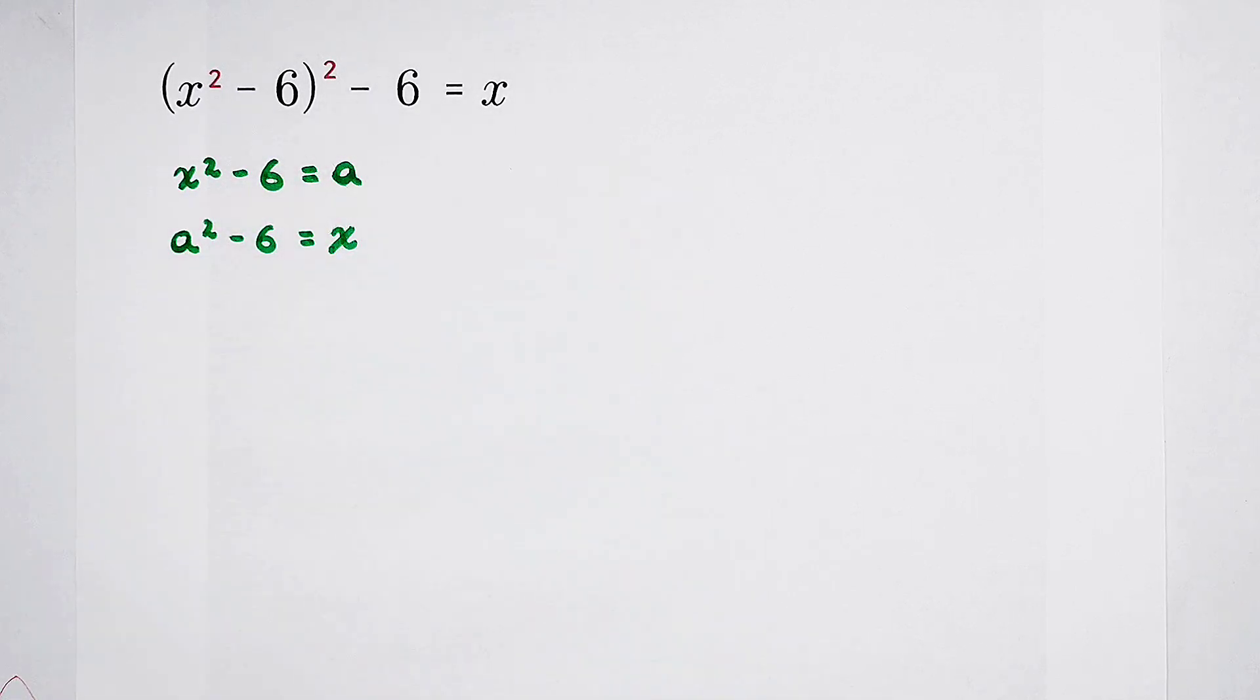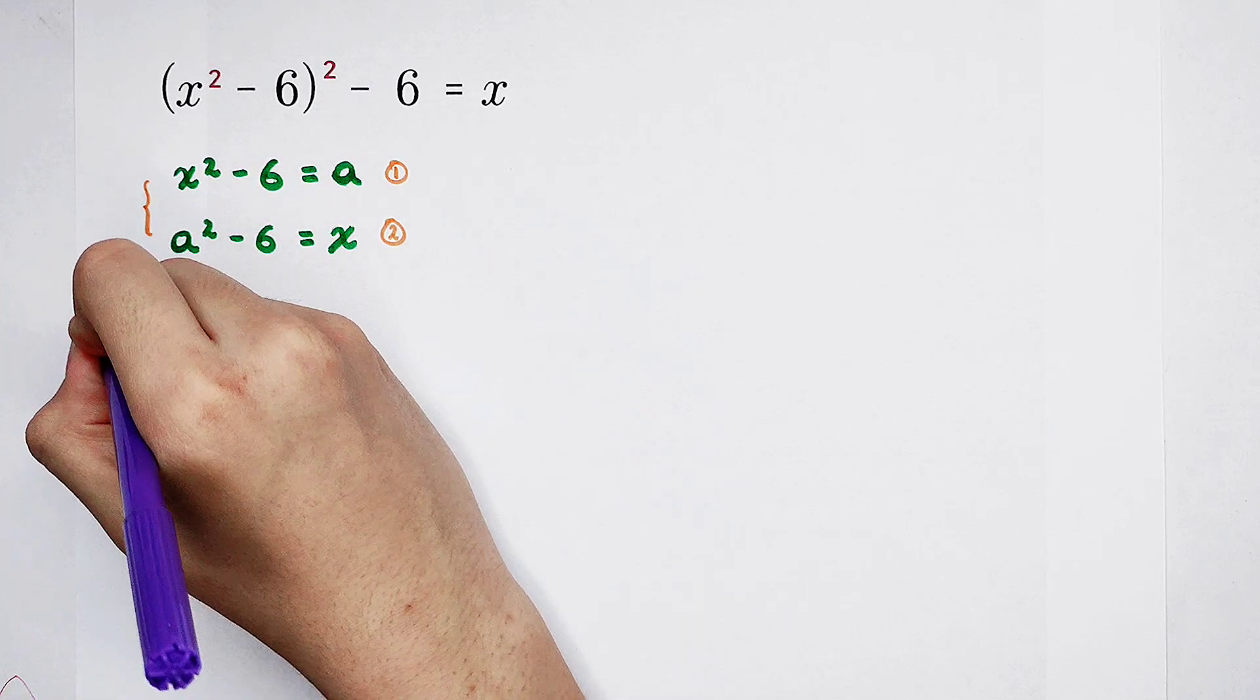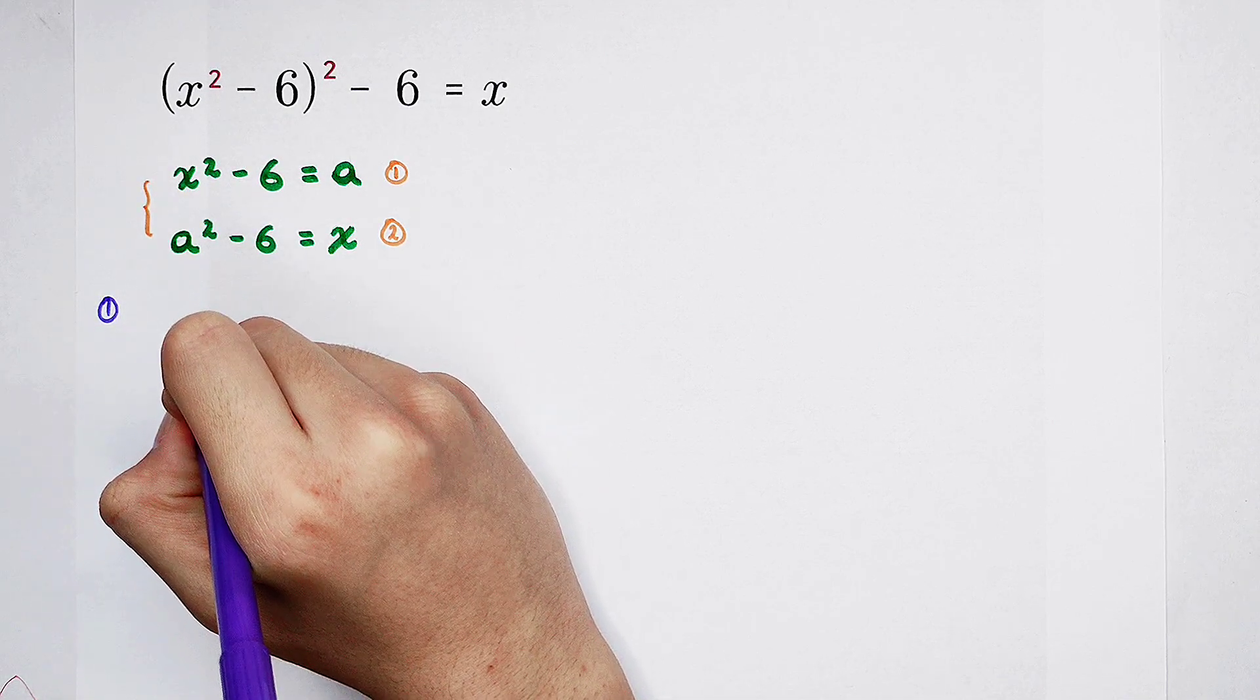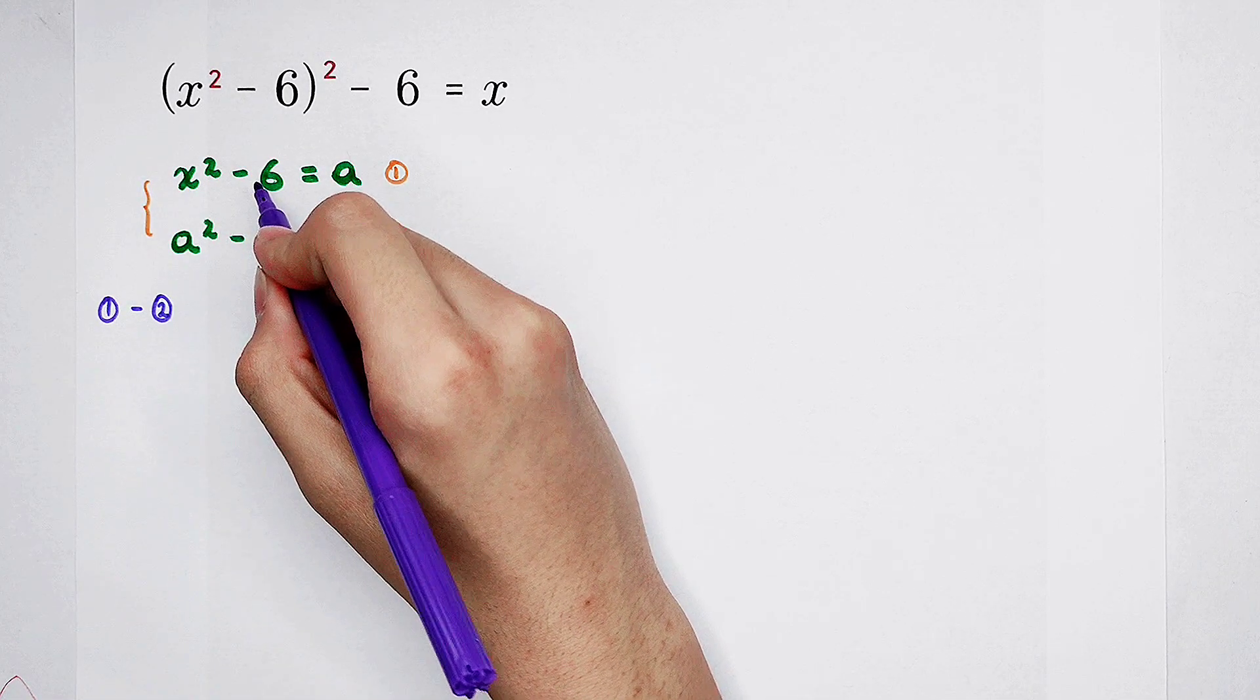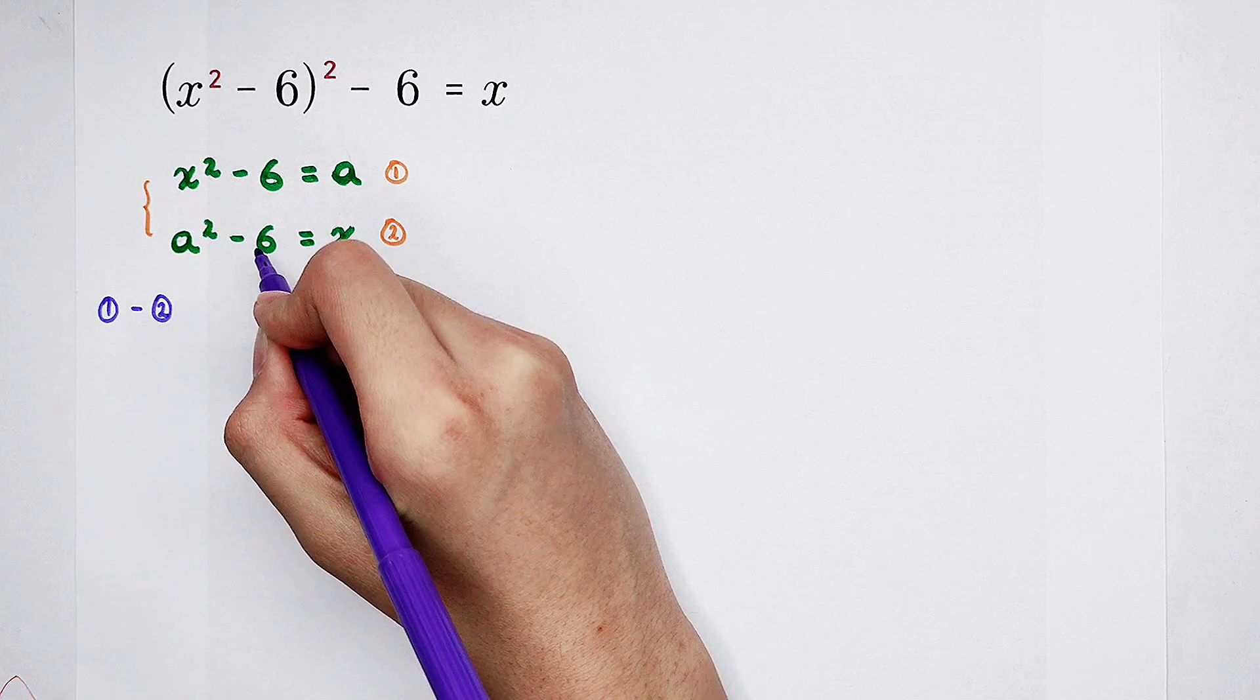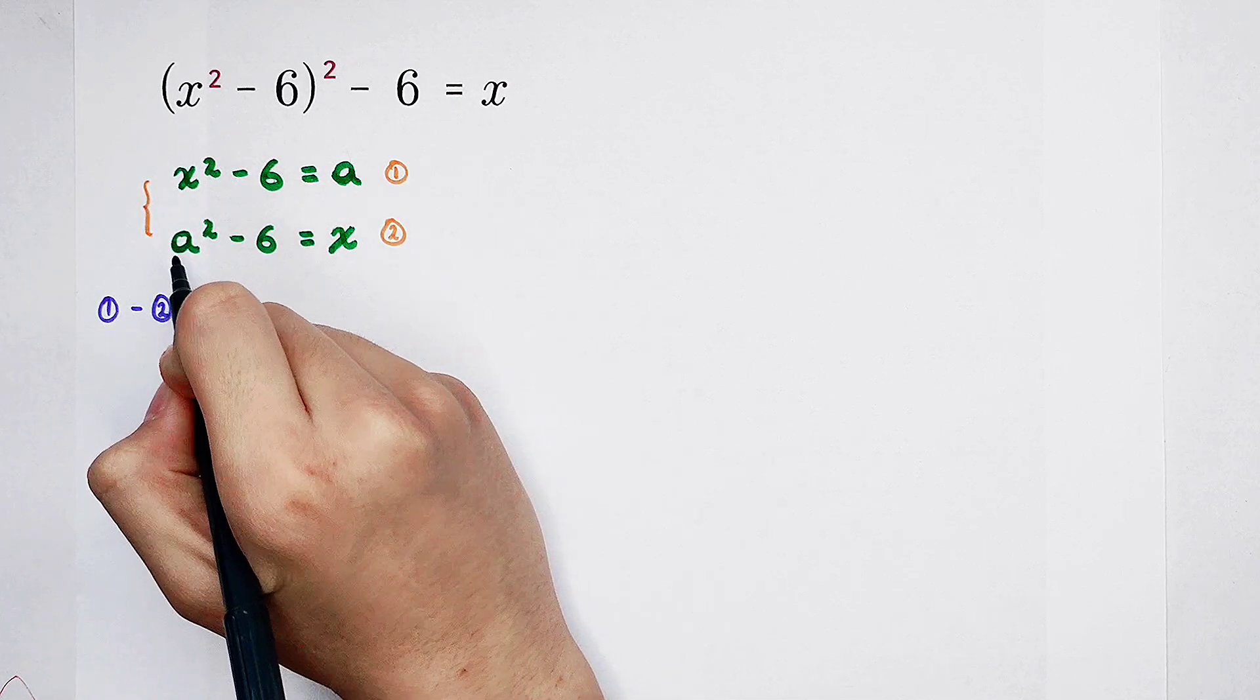Look at the forms of these two equations. Now, what I'm going to do is let the first equation minus the second equation, subtraction. Since minus 6, then minus negative 6, they can be cancelled out. In the new equation, there will only appear x and a.